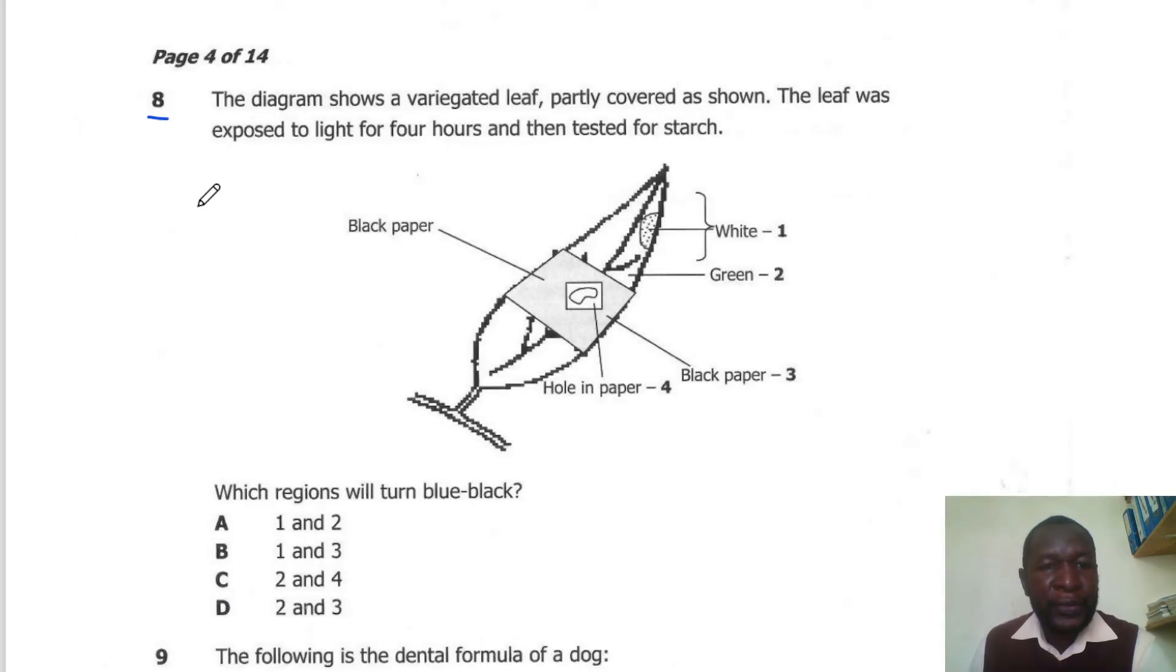Question 8. The diagram shows a variegated leaf, partly covered as shown. The leaf was exposed to light for four hours and then tested for starch. Which regions would turn blue-black? The parts which would turn blue-black are the ones exposed to light. The parts exposed are 2 as well as 4. So the correct answer is C.